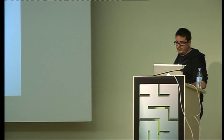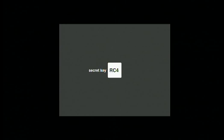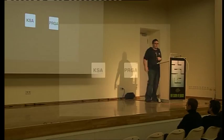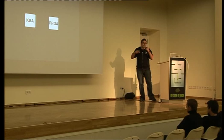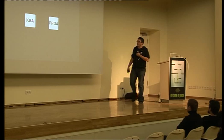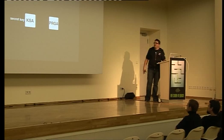Now let's look at RC4. It's a stream cipher: you input a secret key and get the key stream. Inside RC4, there are two algorithms: KSA and PRGA. KSA stands for Key Scheduling Algorithm, which permutes values according to the key. PRGA is the Pseudo-Random Generation Algorithm. The secret key is the input to the KSA, which generates an array of 256 bytes called S prime — a permutation of values according to the secret key. Then, when you need one byte of the key stream, you use the PRGA.